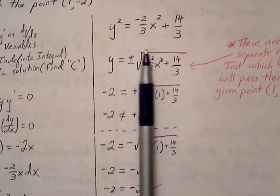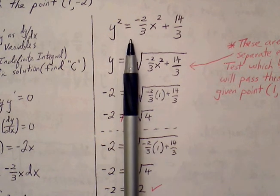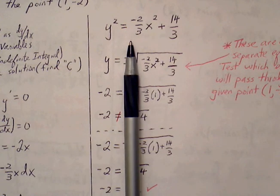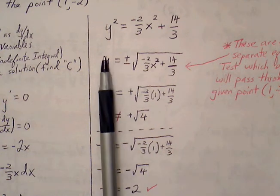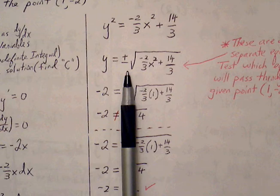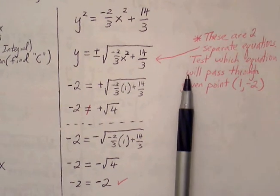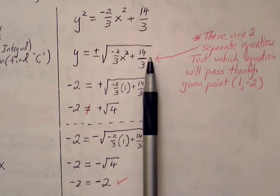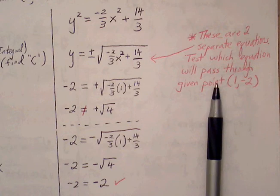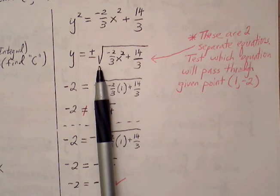Now, in the back of the book they accept this as an acceptable solution, but we're going to go a little bit further and solve for y. This will be important for the test as well as for the AP exam. To solve for y, we have to take the square root of both sides to get rid of y squared. When we do that, on the right side we're left with two functions: a positive square root function and a negative square root function. These are two separate equations, so we'll have to test which one is true for the point (1, negative 2).